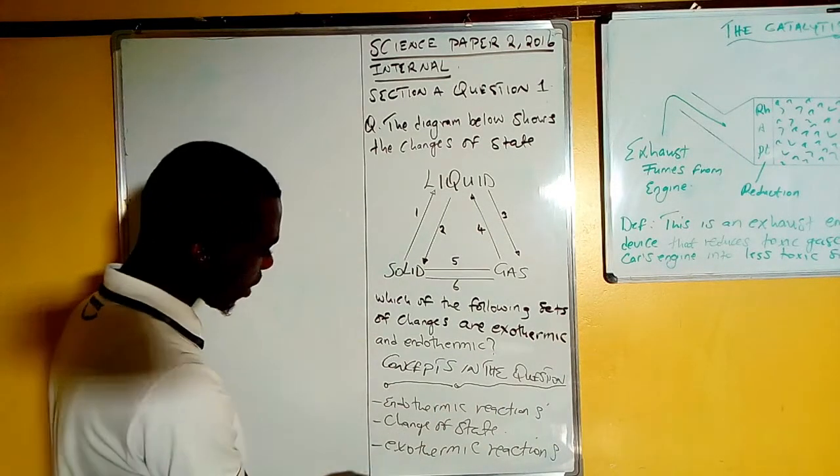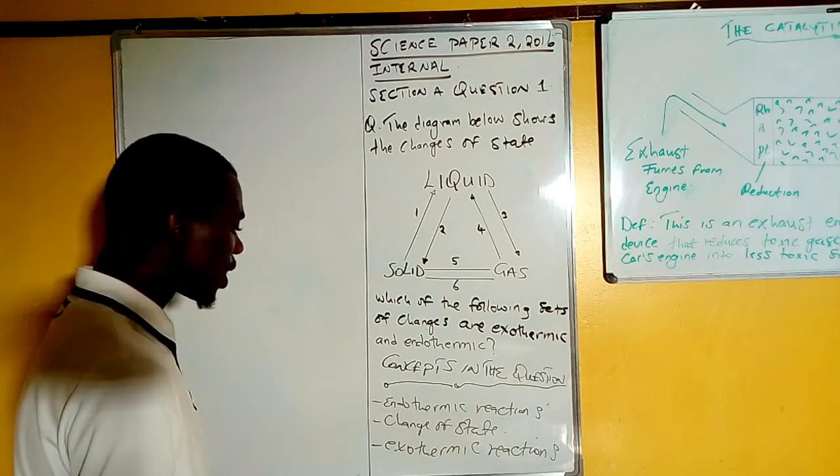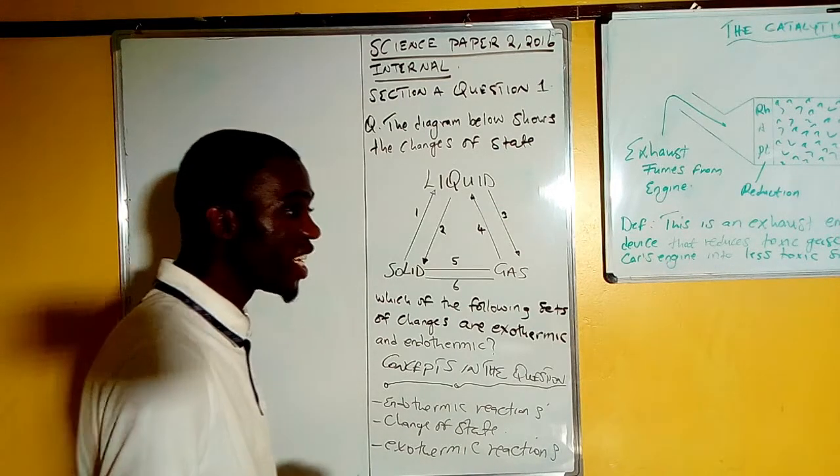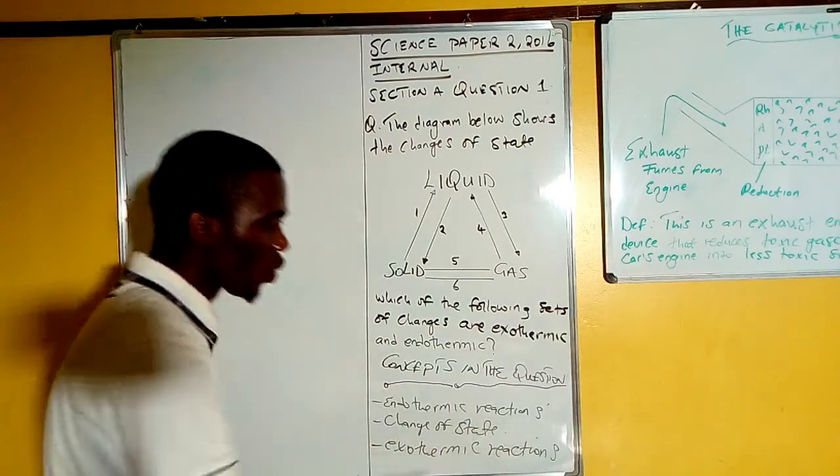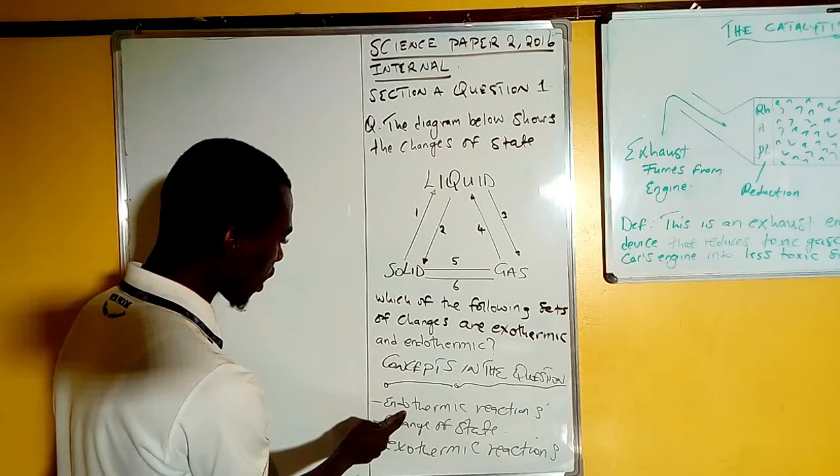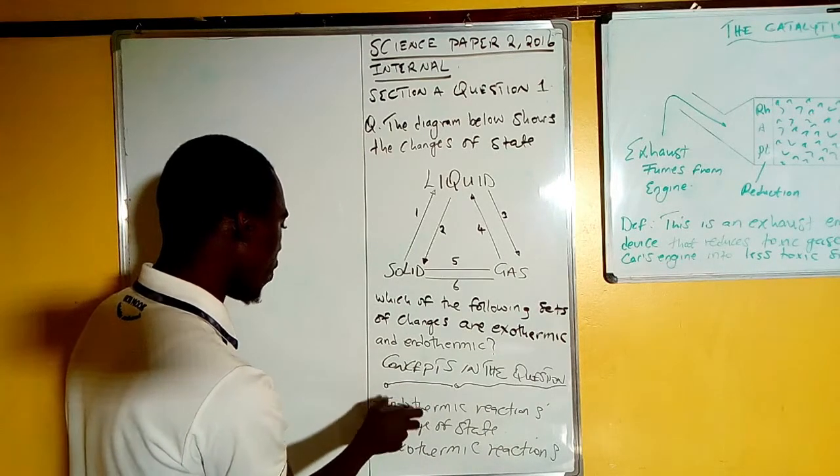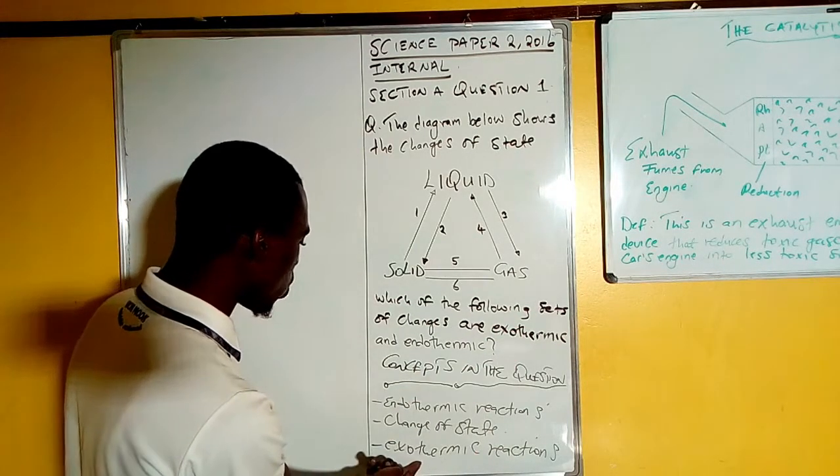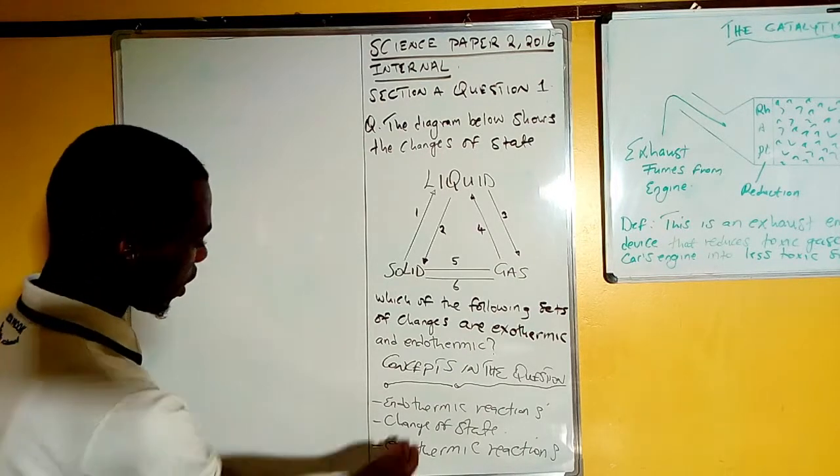Then exothermic reactions are the opposite. These are types of reactions in which heat is produced, meaning that particular thing is removing heat to the outside. Because endothermic reactions take heat into the system, it means that the temperature of the system will increase. This one is losing, so the temperature will decrease.